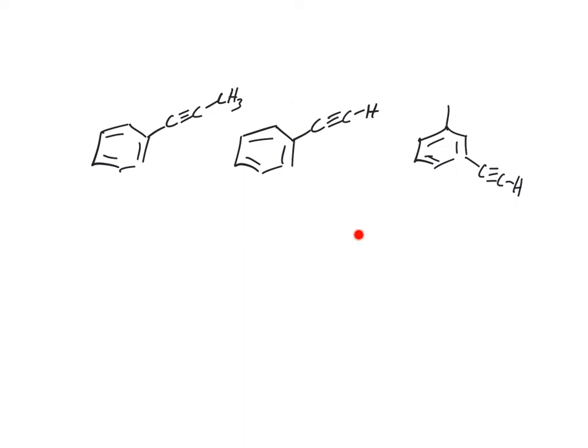I want to talk about how to distinguish between similar compounds using IR and NMR. I'm going to go through these three examples of alkynes and talk about what stretches I'd be looking for and how many proton NMR peaks I would expect to see in these molecules.